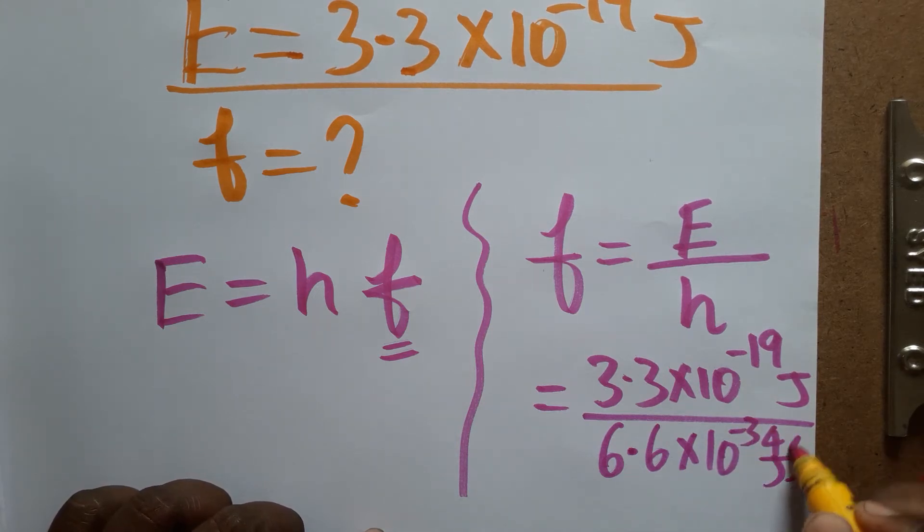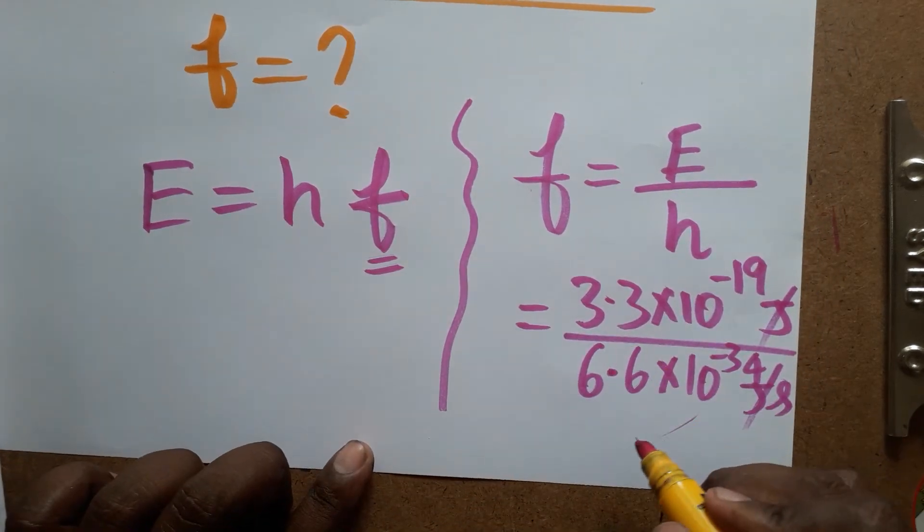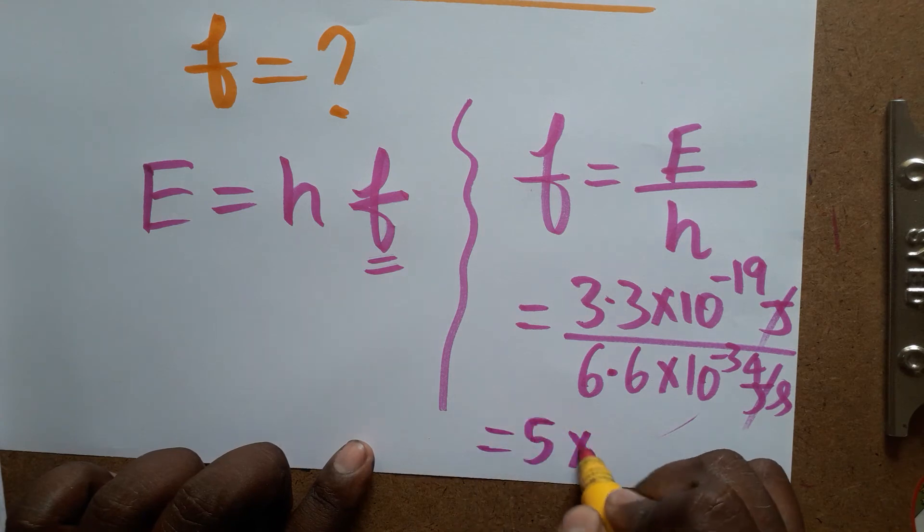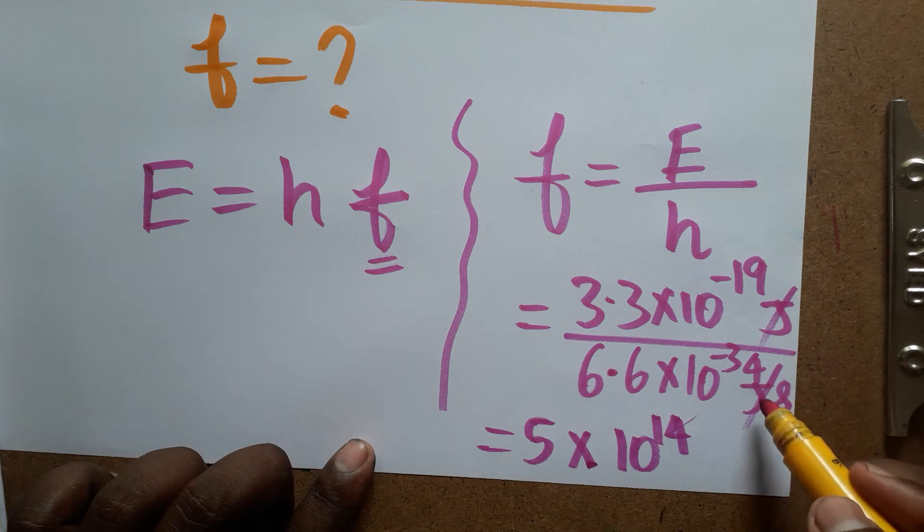Joules get canceled. This whole calculation we are going to get as 5 into 10 power 14. It is second, we will get as 1 divided by second, which we can call hertz.